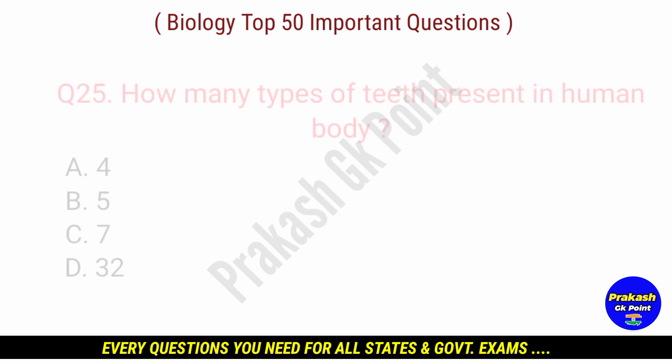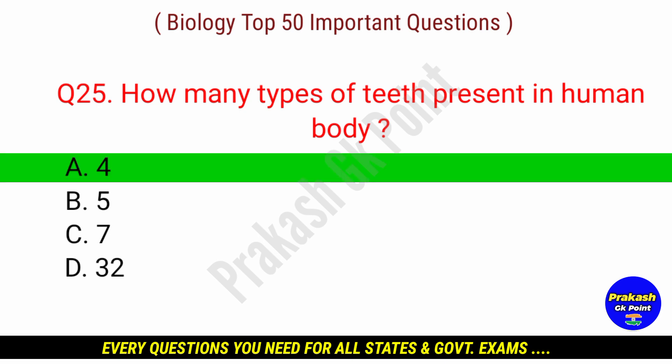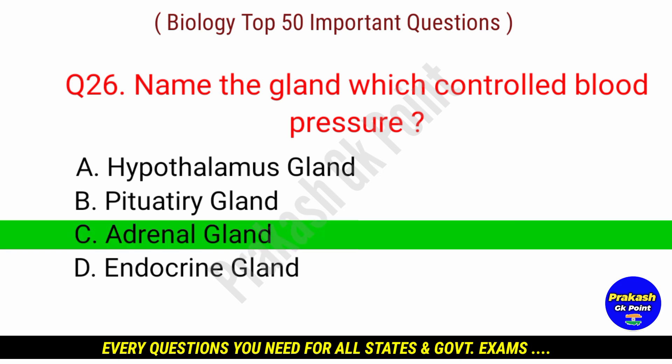How many types of teeth are present in the human body? Answer: option A — 4 types of teeth. Name the gland which controls blood pressure. Answer: option C — Adrenal gland.